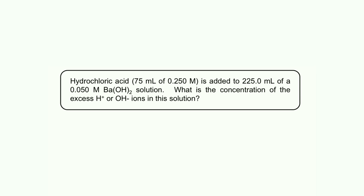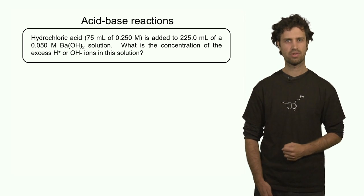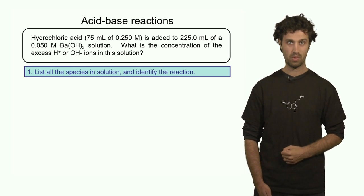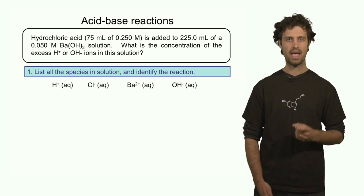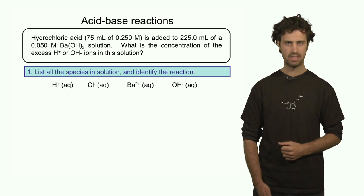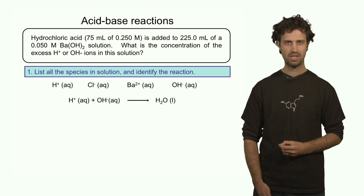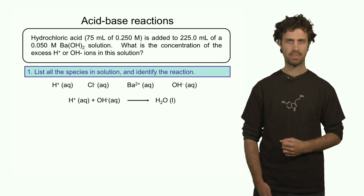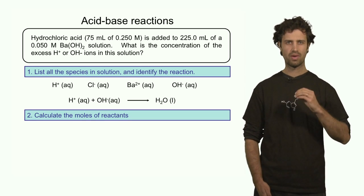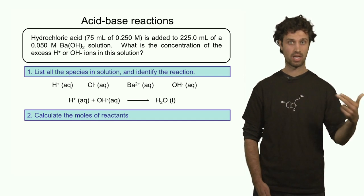In the second and last example, we start again with a basic solution — barium hydroxide — and we are going to add an acidic solution, hydrochloric acid. But in this particular case, we are not quite sure if we completely neutralize the original solution. In order to determine that, we want to find out if there are excess reagents — if there are excess H⁺ or excess OH⁻ left in the solution after the reaction has completed. We list the ions in solution: H⁺ and Cl⁻ from the hydrochloric acid, and barium ions and hydroxide ions from the barium hydroxide. The net ionic equation is, once again, protons interacting with OH⁻ forming water molecules. What we want to calculate is the number of moles of H⁺ and OH⁻, and then compare them to see if there is a limiting and an excess reagent.